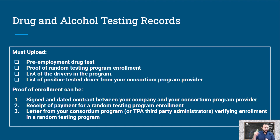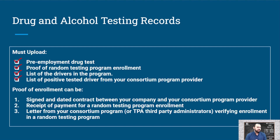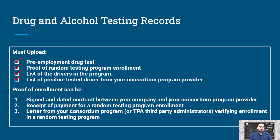Next up is your drug and alcohol testing records. You need to upload at least for one driver: the pre-employment drug test, the pre-screening proof, the random testing program enrollment form, list of the drivers in the program, and list of any positive tests from drivers from your consortium program. Your drug and alcohol consortium program will provide all of this for you. Make sure you sign up with them right away, because nobody should be stepping in that truck unless this is in place.